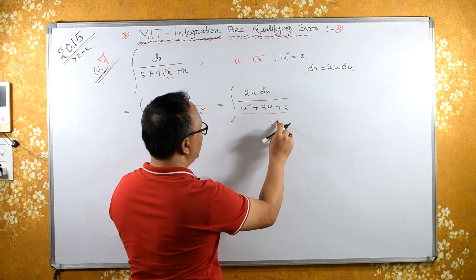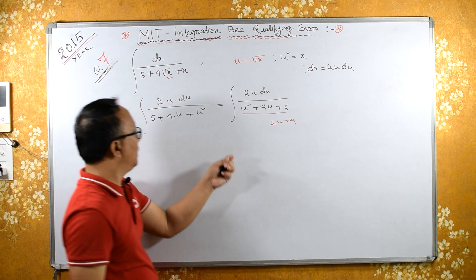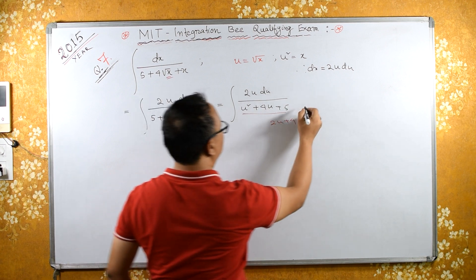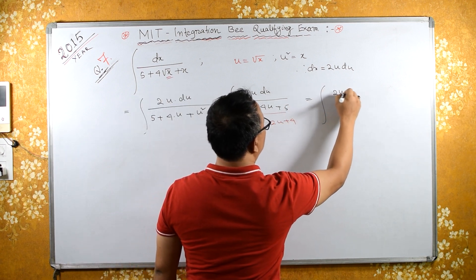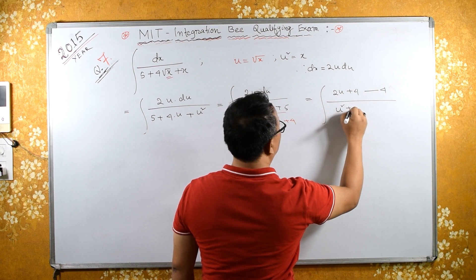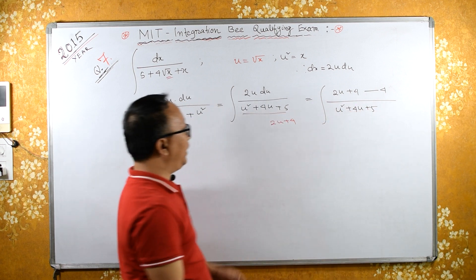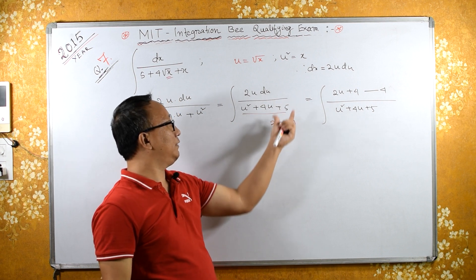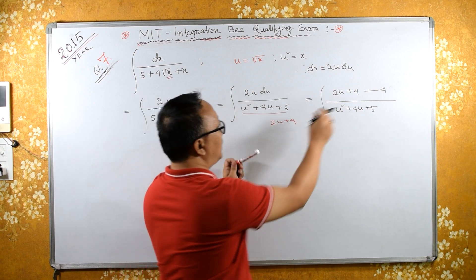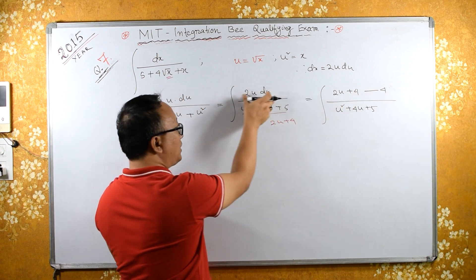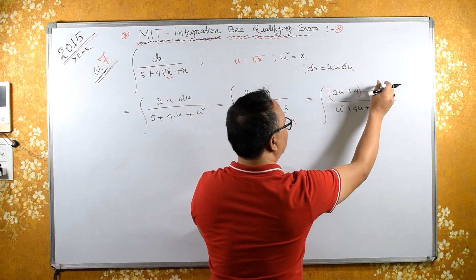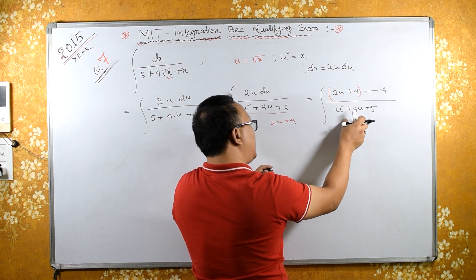Now check: the differentiation of the denominator is 2u plus 4. We have 2u in the numerator, so we can adjust by adding and subtracting 4. The numerator becomes 2u plus 4 minus 4 upon u squared plus 4u plus 5. If the numerator matches the differentiation of the denominator, the result is log of the denominator.